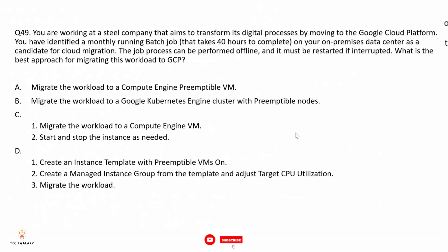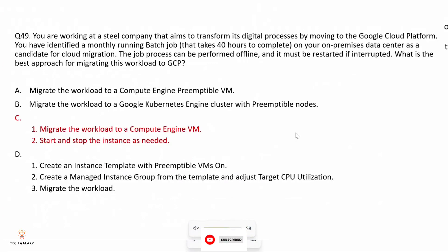Question 49: You are working at a steel company migrating to Google Cloud. You have identified a monthly batch job that takes 40 hours to complete on your on-premises data center as a candidate for cloud migration. The job can be performed offline and must be restarted if interrupted. What is the best approach for migrating this workload to GCP? The correct answer is option C.